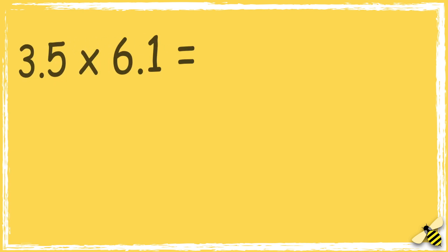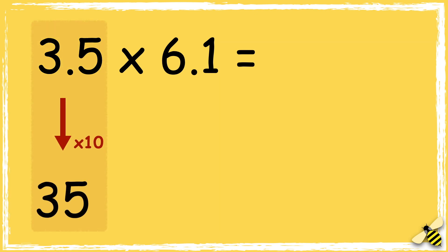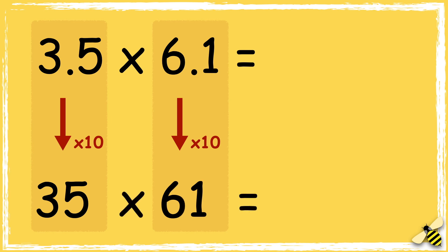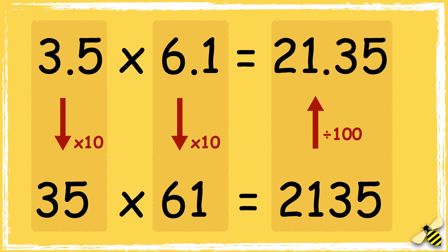Let me explain what we did with the decimal points. We started with 3.5 multiplied by 6.1. We multiplied 3.5 by 10, and we also multiplied 6.1 by 10. So 35 multiplied by 61, which was 2135. As we had previously multiplied the factors by 10 and then by 10, the answer is 100 times bigger. So we need to do the inverse and divide the answer by 100, which gives us the answer 21.35.